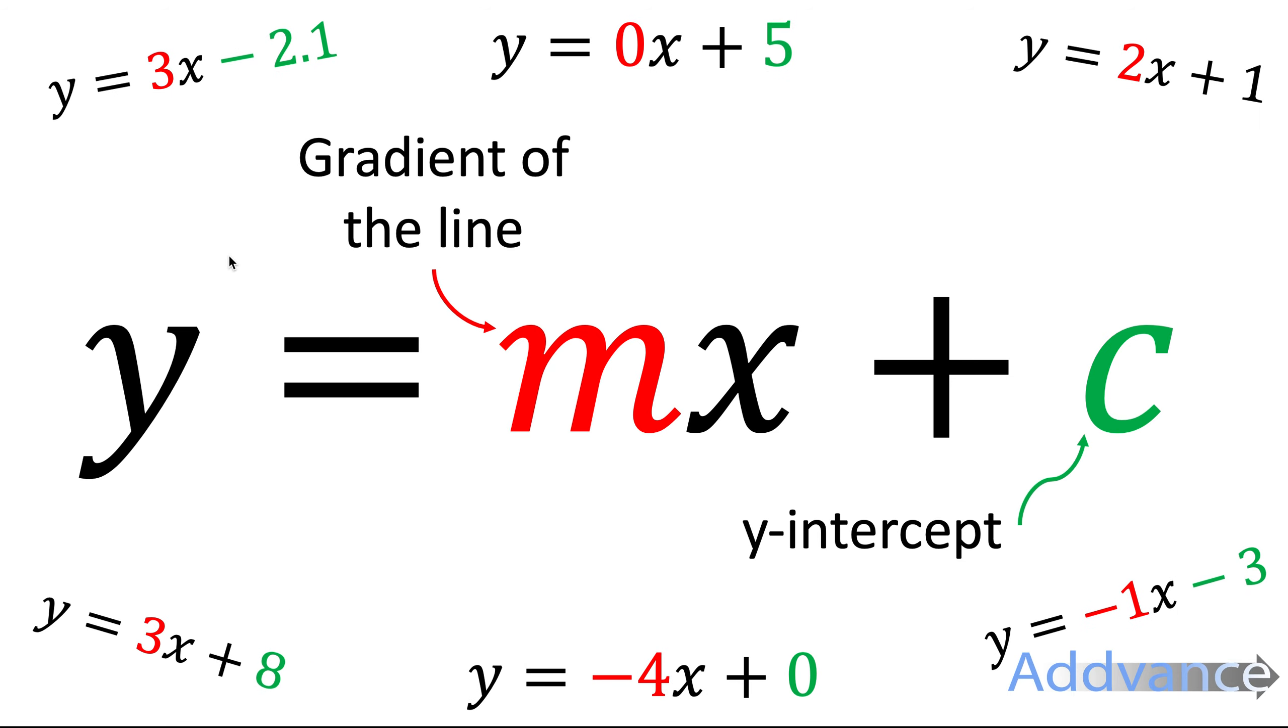What we can take from this is that for y equals mx plus c, the gradient of the straight line is given by m, and the y intercept is given by c.